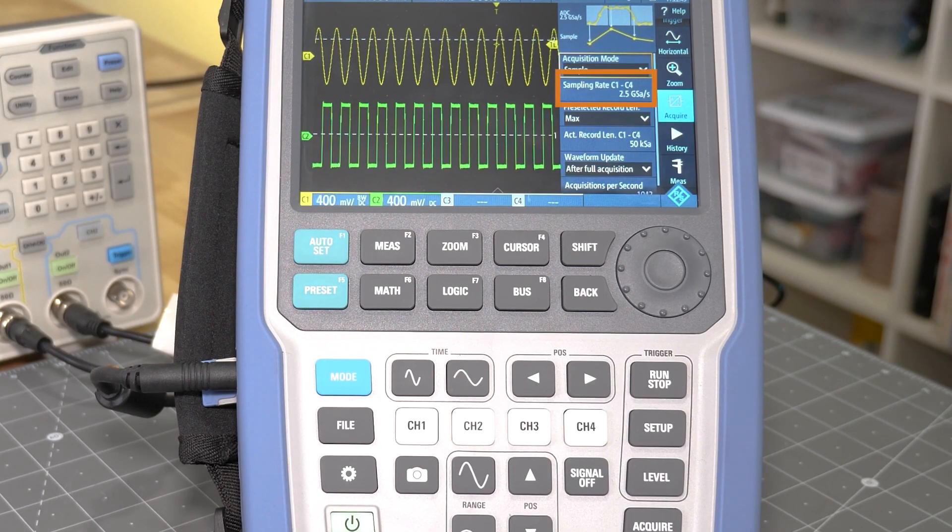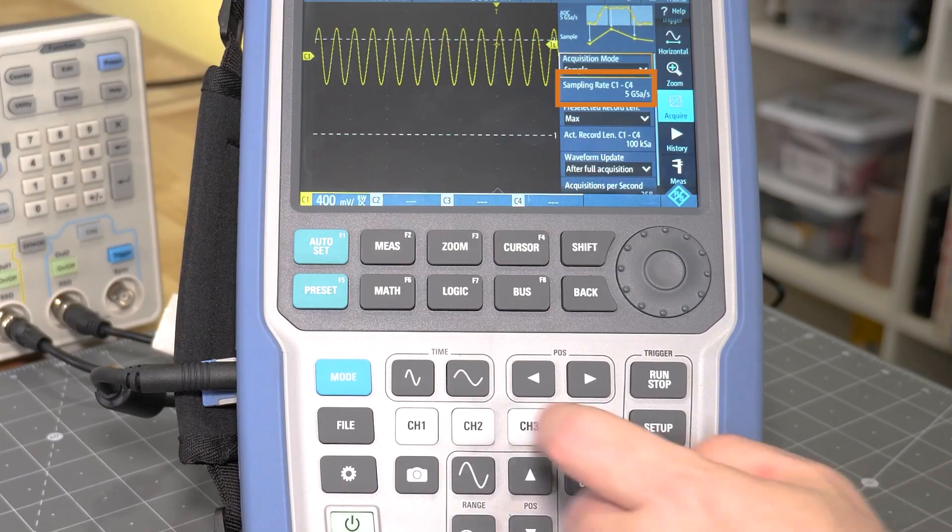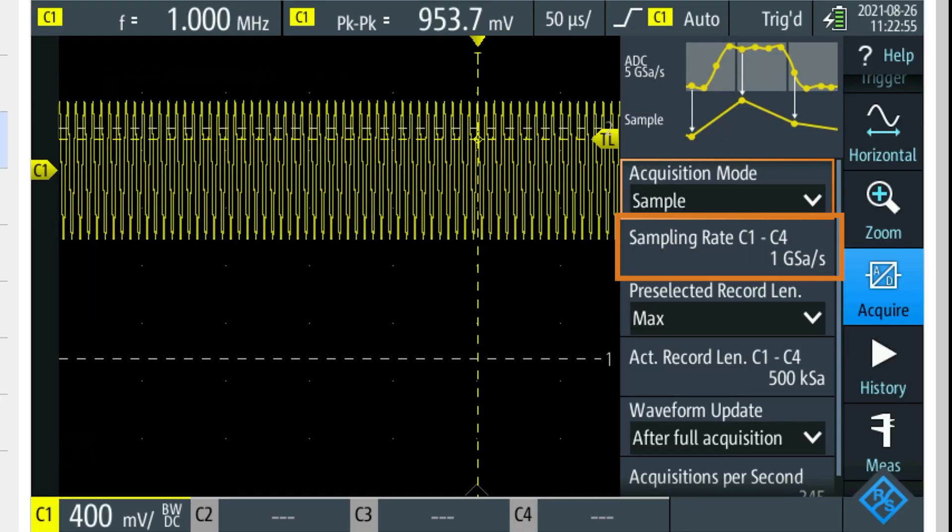Keep in mind that oscilloscopes will change their sample rate depending on factors like the number of active channels, time-based settings, and the amount of acquisition memory available.